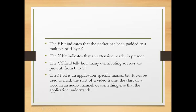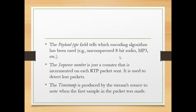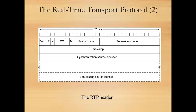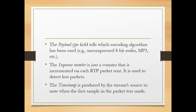Next is Payload Type. The payload type field tells which encoding algorithm has been used, for example uncompressed 8-bit audio or MP3. Next is Sequence Number. The sequence number is just a counter that is incremented on each RTP packet sent — 1, 2, 3 and so on. It is used to detect lost packets: as packets are sent the sequence number increases, and if a packet is missed, we can detect which packet was lost.